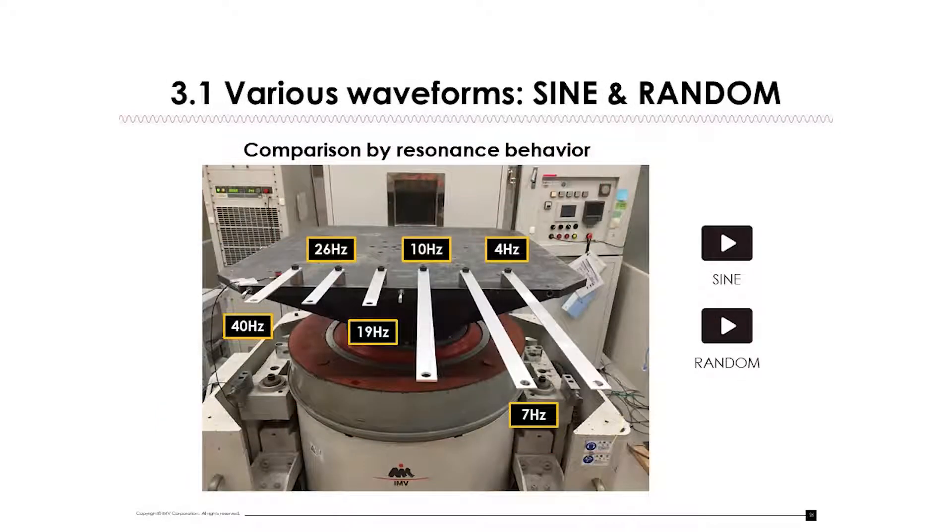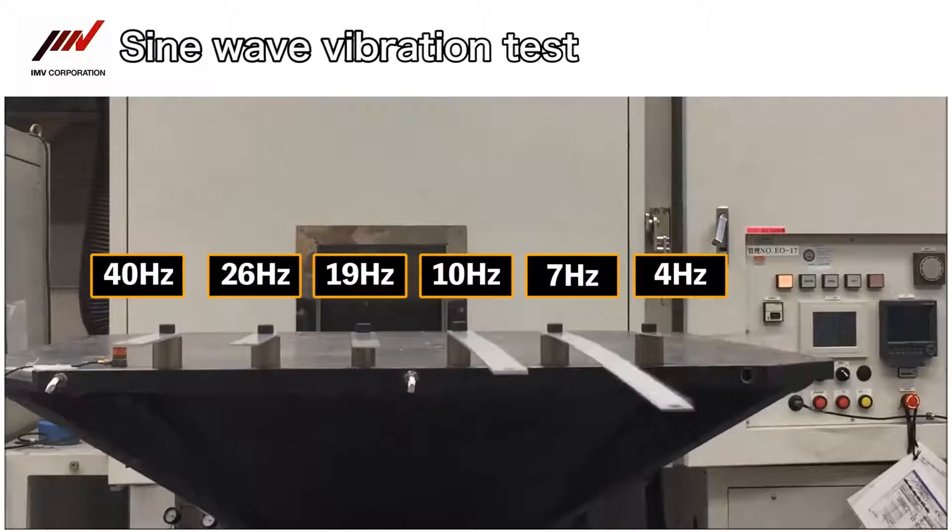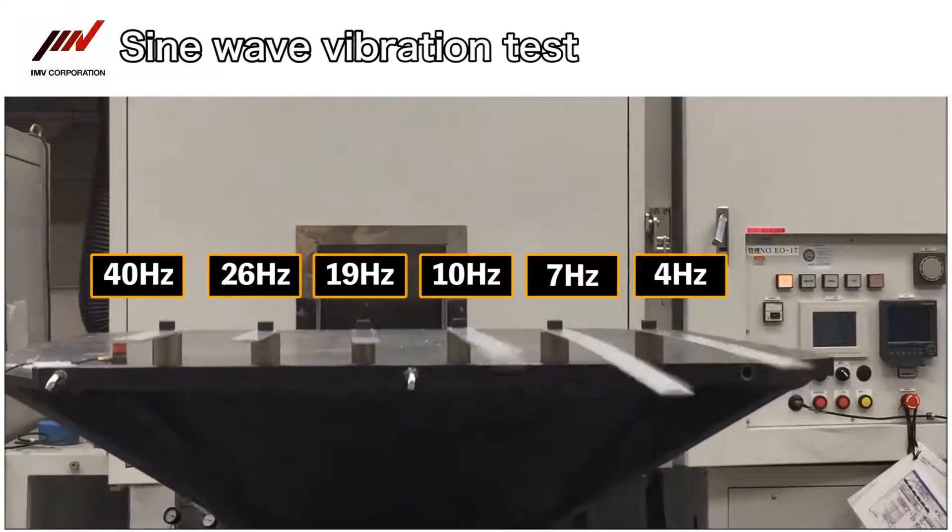The next motion video shows an experiment on what will occur when giving a vibration to a specimen with various resonance points. Six plates with different natural vibration frequencies are fixed on a system. As shown in the video, the timing that each plate resonates is displayed due to a different natural vibration frequency.